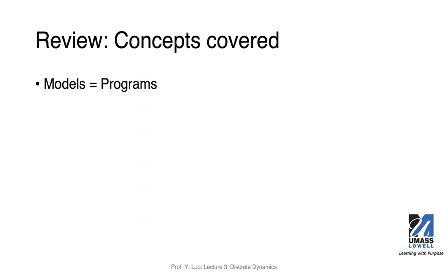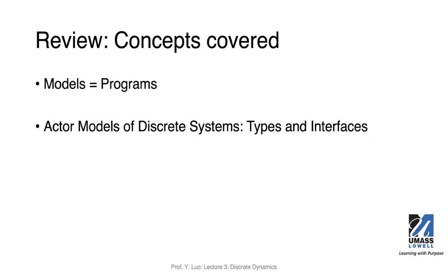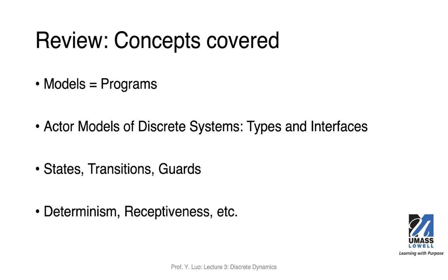In summary, for finite state machine dynamics and discrete dynamics, we talked about models and creating state machines. We discussed actors, input signals, output signals, and their types — pure signals and numerical value types. We covered states, transitions, guards, and actions in depth. We also discussed determinism, receptiveness, and non-deterministic finite state machines.